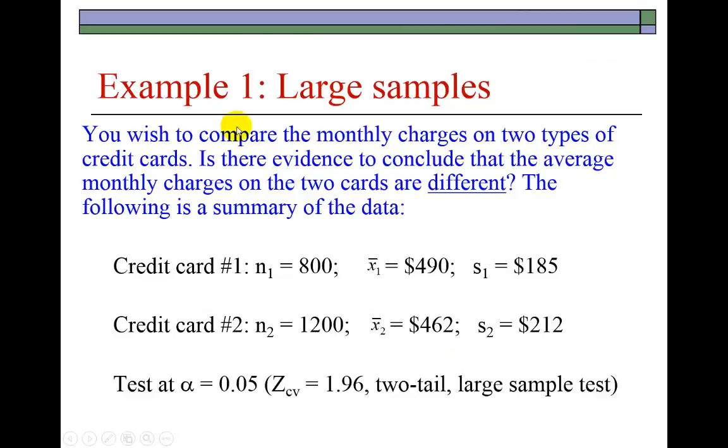Look at this quick first example. It says you wish to compare the monthly charges on two types of credit cards. Is there evidence to conclude that the average monthly charges of the two cards are different? Different could be on the upside or on the downside, so you know already that this is going to be a two-tailed test.